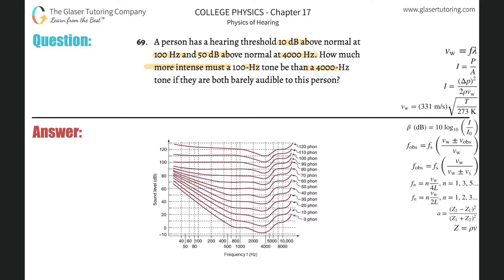All right, so here's the graph again. The zero phon value is the barely audible — this is the threshold of hearing. So what we're going to do is find the 100 hertz frequency, which is right about here, and then find the 4,000 hertz, which is going to be this line right about here.